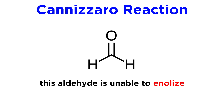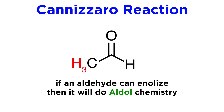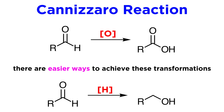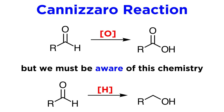The reaction is quite general for aldehydes that cannot enolize. If the aldehyde is enolizable, meaning that it has alpha-hydrogens, then enolates tend to form, followed by aldol reactions. The synthetic utility of the reaction is limited because there are better ways to oxidize an aldehyde to a carboxylic acid or reduce it to an alcohol. It is however important to be aware of this reactivity when planning reactions of aldehydes under basic conditions, such as with aldol chemistry.